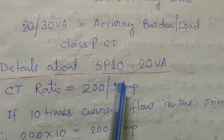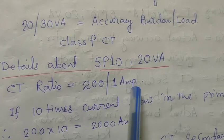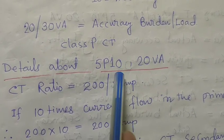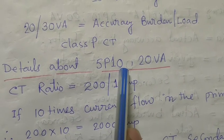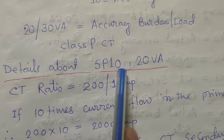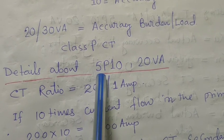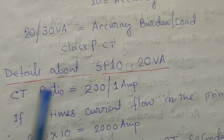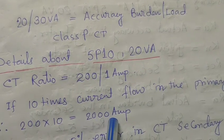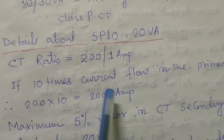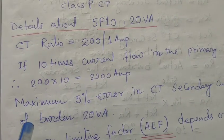Details about the 5P10 and 20 VA CT. Suppose we are taking a CT ratio of 200/1 ampere. What is the meaning of 5P10? If the nameplate gives the information that the CT is 5P10 and 20 VA, that means 10 times the rated current can flow through the primary side of the CT during fault conditions. At that particular time, a ±5% composite error may be present in the secondary current. For example, if 10 times the current flows to the 200 A primary, the fault current will be 2000 A (2 kA), and during this 2 kA flow, the maximum 5% error occurs in the CT secondary current under a burden of 20 VA.